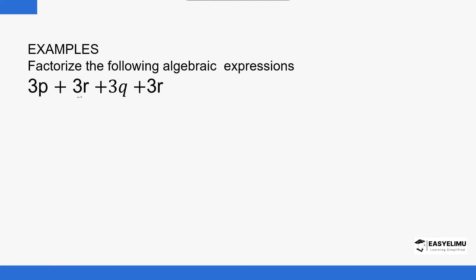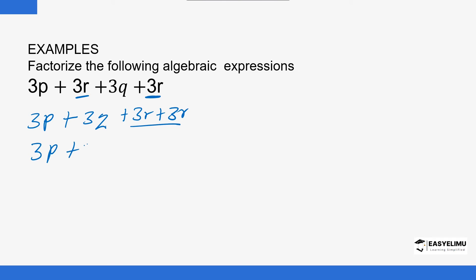First of all, you can add like terms together. We have 3p plus 3q plus 3r plus 3r, so we add the like terms to get 6r, giving us 3p plus 3q plus 6r. Now if you want to factorize, we look for a factor that can be common to all — a number that can divide all of them. In this case it's 3.